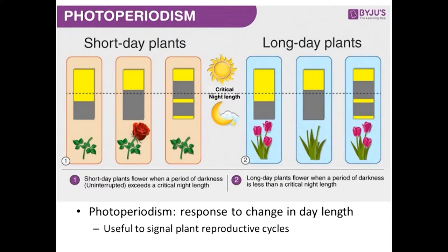Photoperiodism is a specific response to change in day length — the amount of sun or darkness available during the course of a day. This is a strategy utilized by plants to signal growth and reproductive cycles. Short-day plants will start their reproductive cycle after the amount of darkness has exceeded some critical amount necessary for that plant. Long-day plants will start their reproductive cycle only when the amount of darkness is less than some critical amount. Plants are triggered by the amount of darkness or light available so that they are reproducing at the same time as other members of their species.